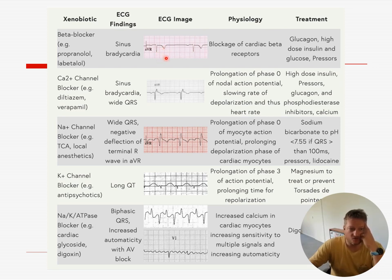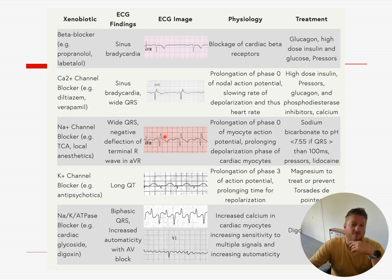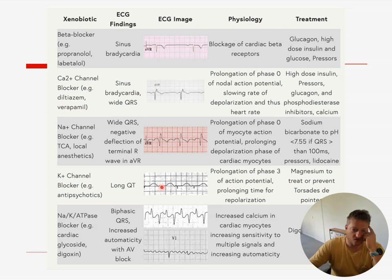Calcium channel blockers will cause bradycardia and widening predominantly of the QRS. Sodium channel blockers also widen the QRS and can particularly affect the R wave in AVR — that might become peaked. Potassium channel blockers — the classic one is sotalol, but also antipsychotics — can block potassium channels and that affects the QT. The longer the QT gets, the more at risk you are of torsades.